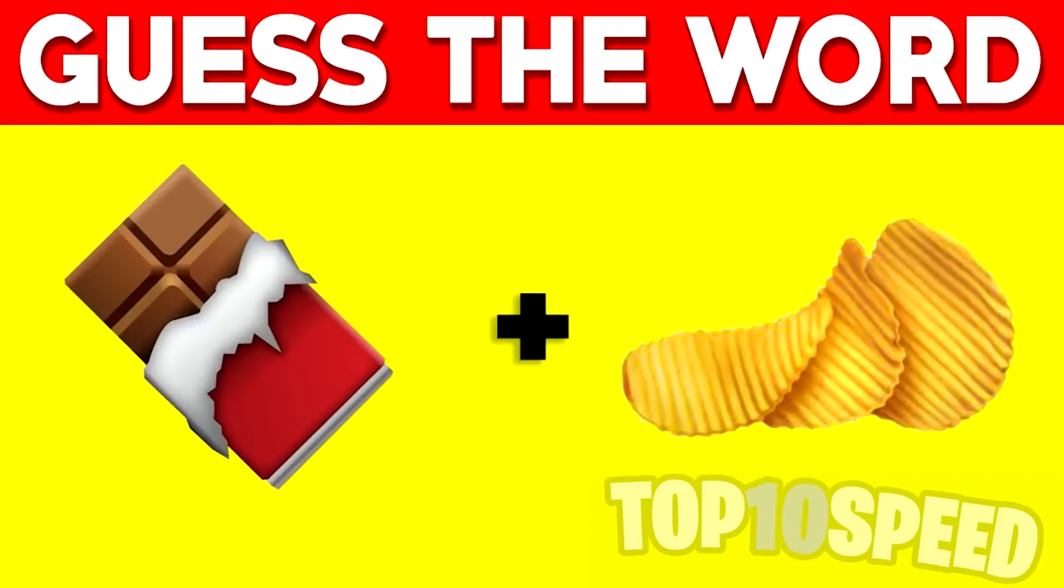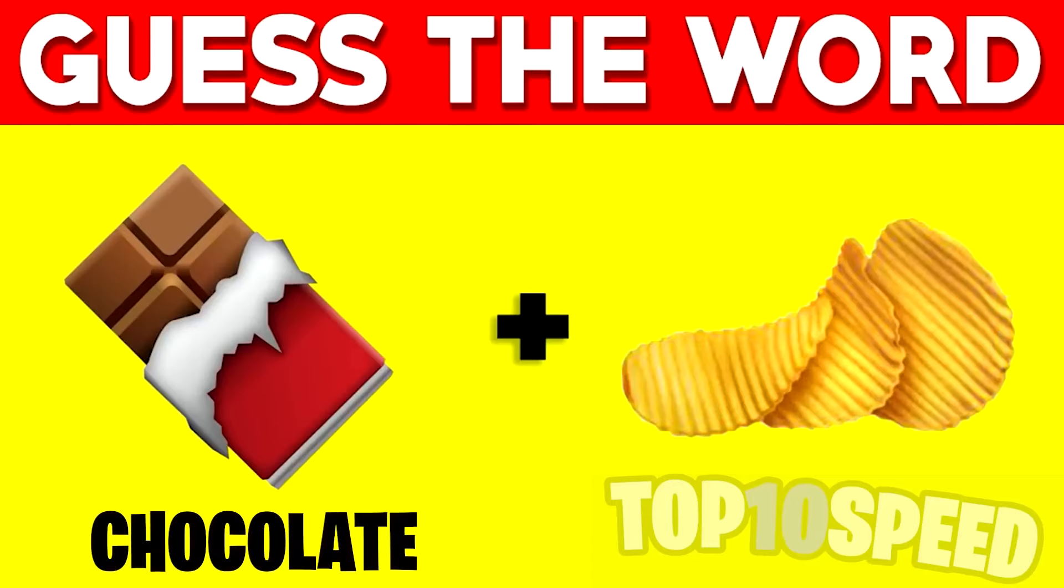The next challenge for you is to try to figure out what that word is, and comment what it is down below. I'll give you guys a few seconds to try to figure this out. So you guys, the first emoji is chocolate, and the second emoji is a chip.